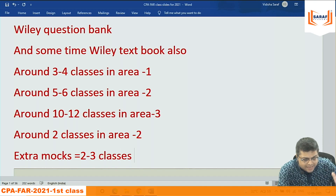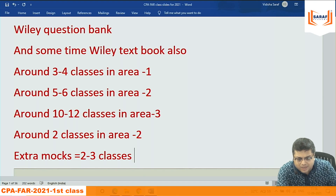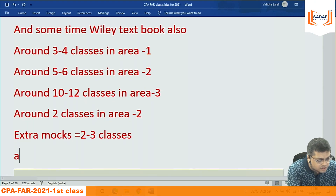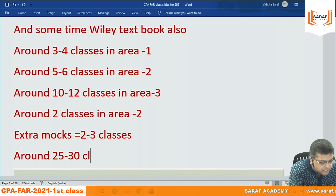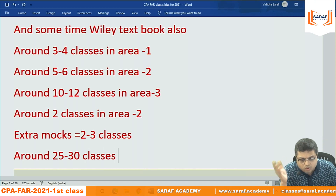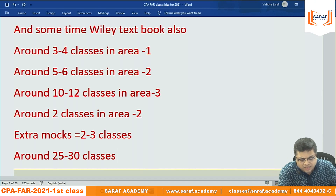Adding up: 4 plus 6 is 10, plus 12 is 22, plus 2 is 24, plus 3 is 27 — around 25 to 30 classes total. Upper level 30, lower level 25. Normally we take around 30 classes to finish FAR.